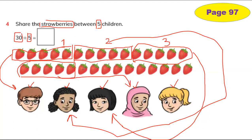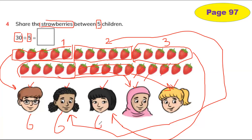The next group is one, two, three, four, five. And the next group is one, two, three, four, five. There are still strawberries left, so you add one more to each group: five plus one equals six. So each child gets six — five plus one equals six for each of the five children.